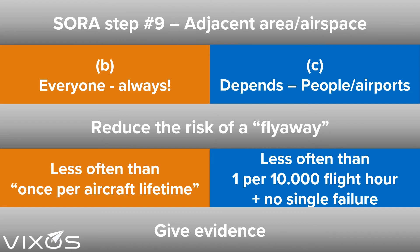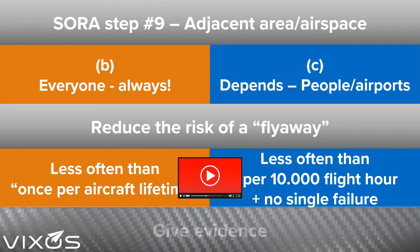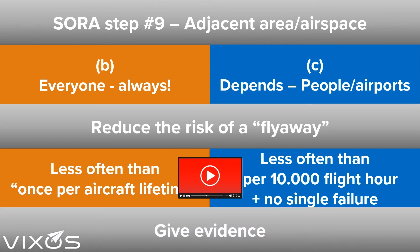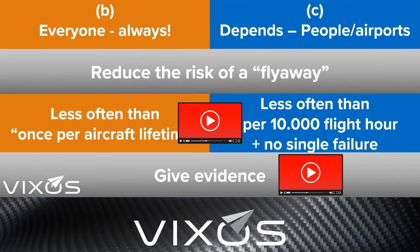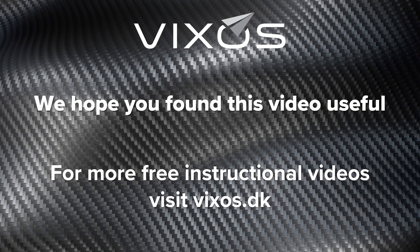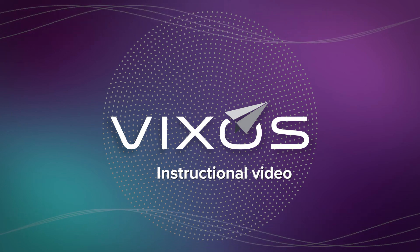Both of these requirements may need some interpretation. Fortunately, we have an instructional video on probabilities that dives into exactly these requirements, and you can find it on the VIXAS website. Finally, you are required to give some evidence that you are in compliance with part B and potentially part C. What this evidence could be and what form it can take, we discuss in yet another instructional video, also available on our website. From the team at VIXAS, we hope you found this video useful and now you know a little more about how SORA step number 9 works. If you are interested in seeing more VIXAS videos, do visit our website at VIXAS.dk.